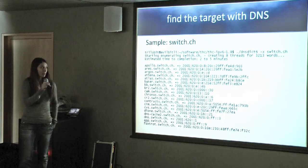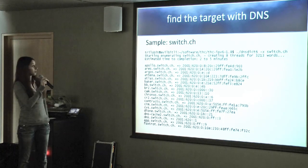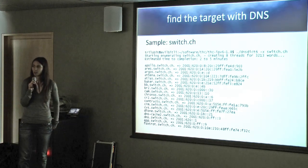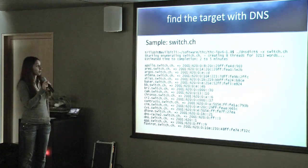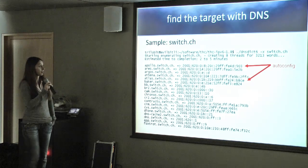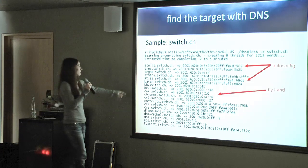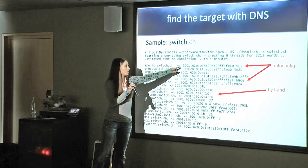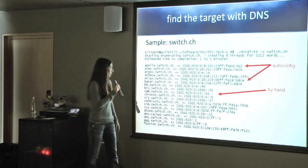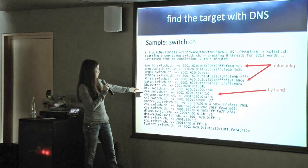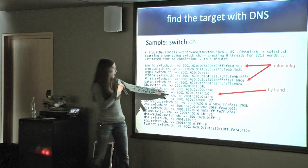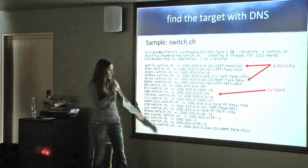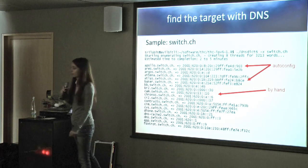Here is another example with a switch. We get a lot more information about it. We can see that Apollo uses auto-config for its IP addresses, while other entries show IP addresses that were configured manually by hand.